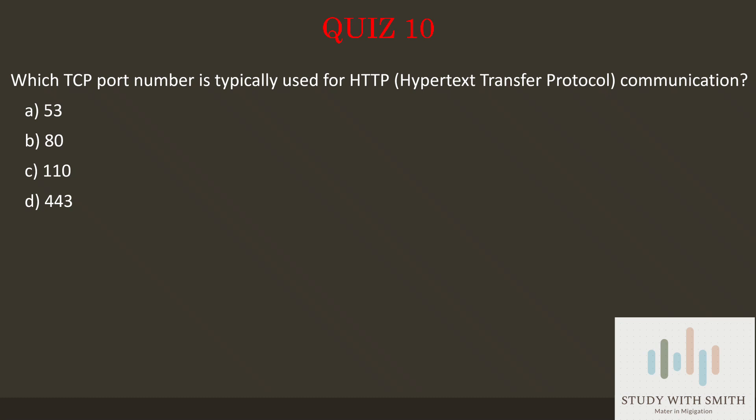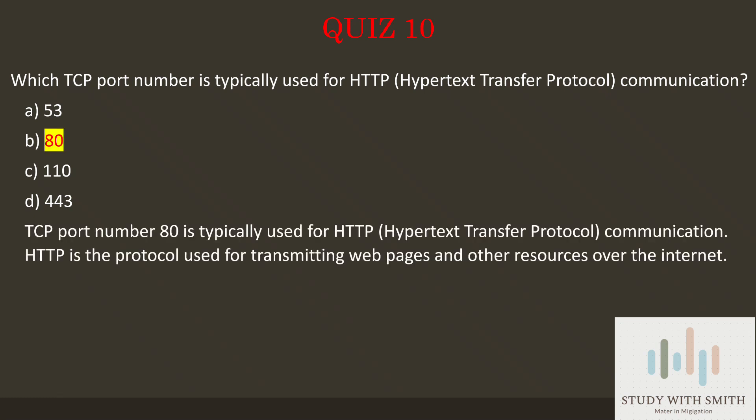Question 10: Which TCP port number is typically used for HTTP (Hypertext Transfer Protocol) communication? Pause the video now to select the best answer. The answer is B — 80. TCP port number 80 is typically used for HTTP (Hypertext Transfer Protocol) communication. HTTP is the protocol used for transmitting webpages and other resources over the internet.